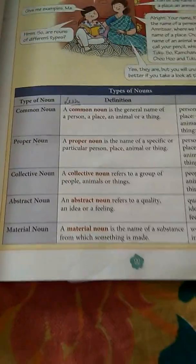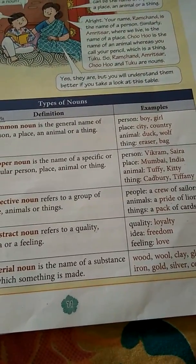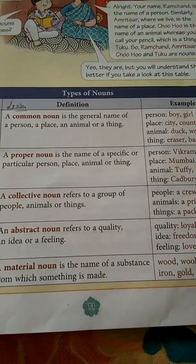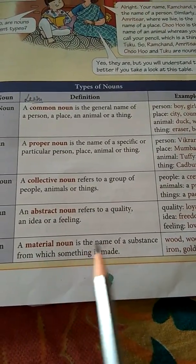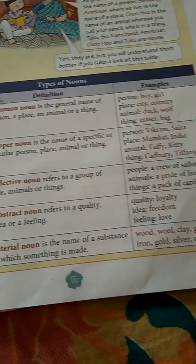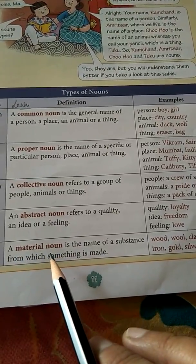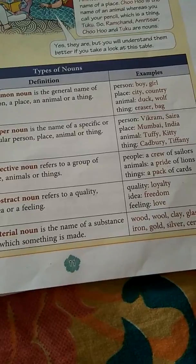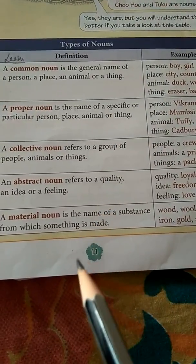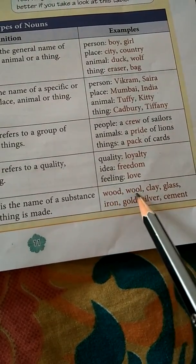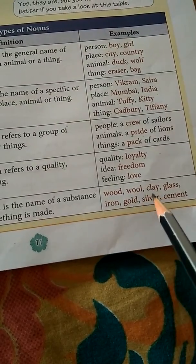Material noun: I did not explain concrete noun before, but today I am going to tell you about material noun and also concrete noun, which is quite related to it. A material noun is the name of a substance from which something is made. For example, wood — from wood we make chairs, tables, cupboards, and many things. So wood is a material noun. A cupboard is already a made thing we can touch and feel, so that is a concrete noun. Examples of material nouns: wood, wool, clay, glass, iron, gold, silver, cement.